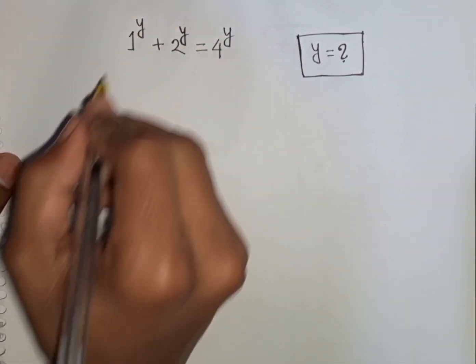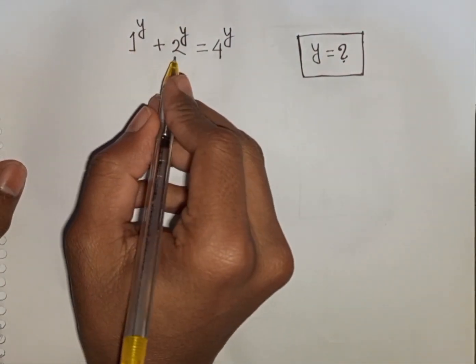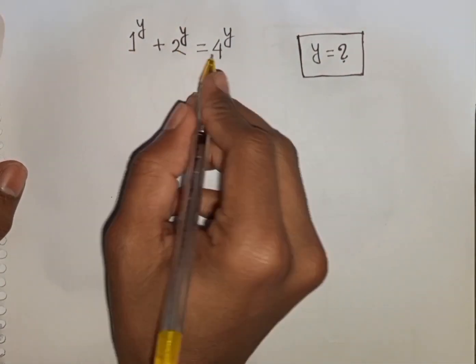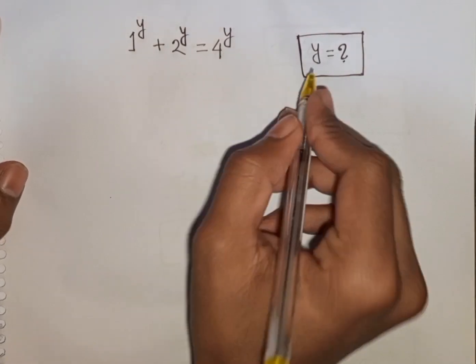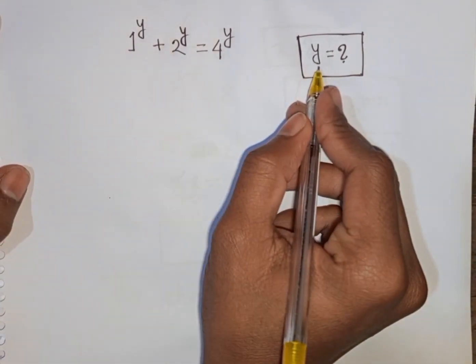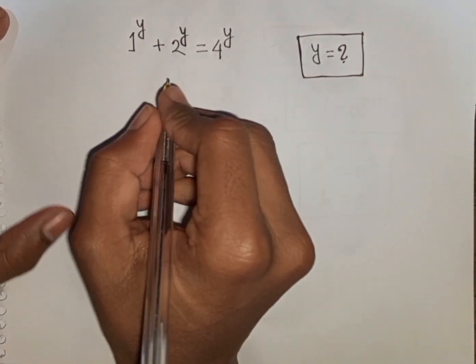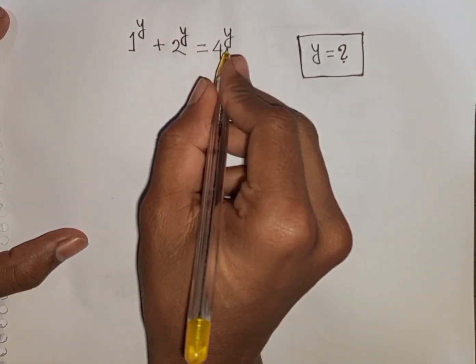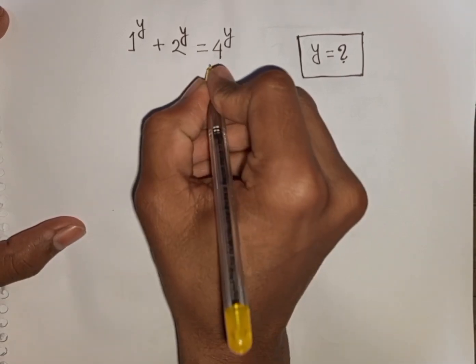How to solve 1 power y plus 2 power y is equal to 4 power y. Find the value of y. So at first we divide both sides by 4 power y.